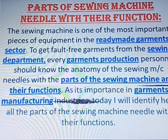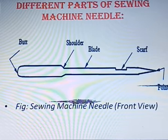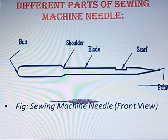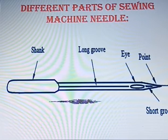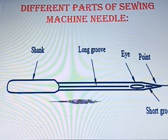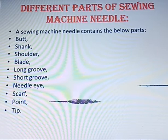This is a diagram of the sewing machine needle. The first part is the butt, the tapering upper part, then the shoulder, then the blade, scarf, and then the point. The other side of the needle shows the shank, long groove, short groove, eye, and point. These are the listed parts of the needle.